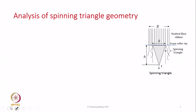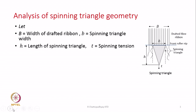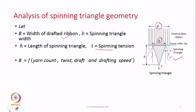Now we will discuss the spinning triangle geometry. A schematic view is given here. B is the width of the drafted ribbon and small b is the spinning triangle width, so there is a difference between capital B and small b. Small b represents the fibres actually participating in yarn formation. The fibres on the edges are likely to be the floating fibres. H is the length or height of the spinning triangle and t is the spinning tension.